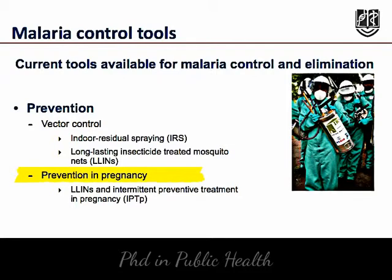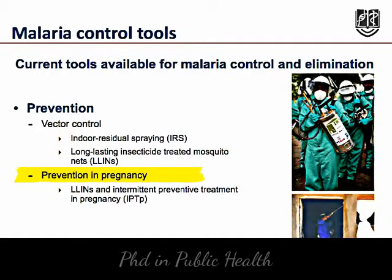Malaria during pregnancy causes morbidity for the mother and increased risk of adverse birth outcomes such as low birth weight, especially in the first two pregnancies. The primary tools for limiting malaria in pregnancy are the use of long-lasting insecticide-treated nets and intermittent preventive treatment.